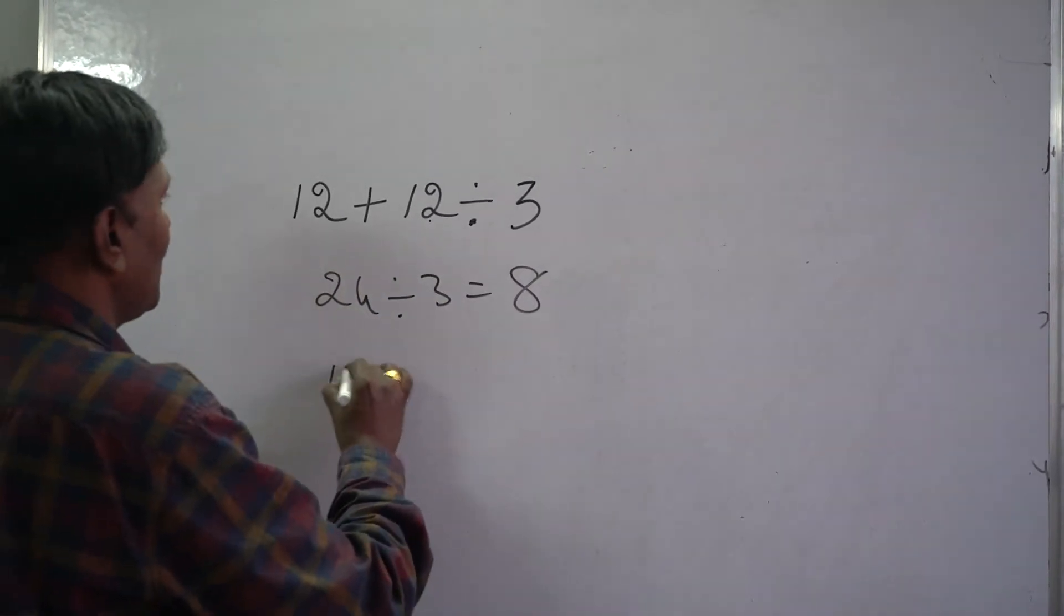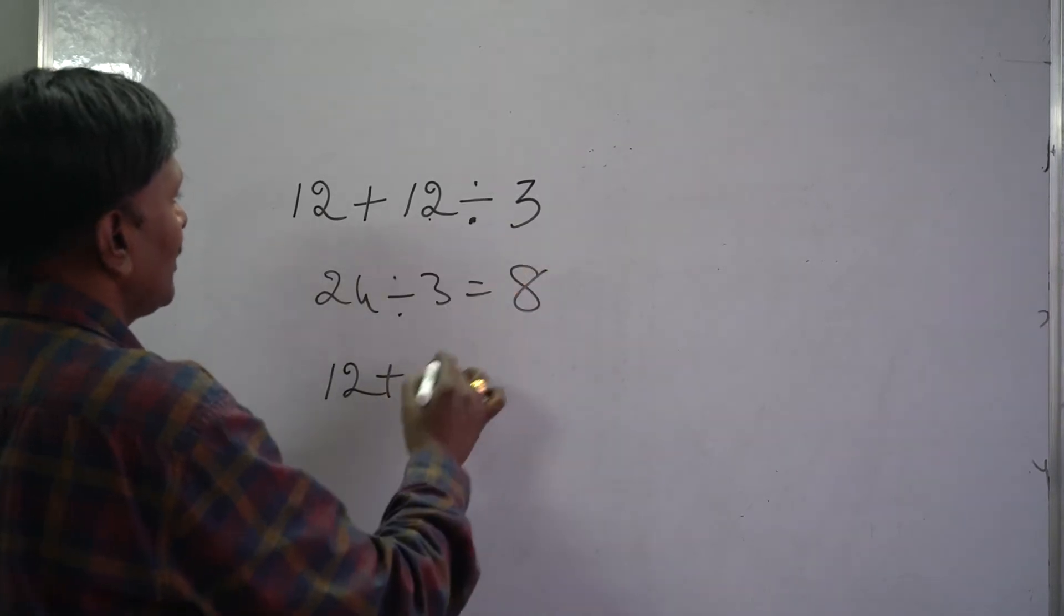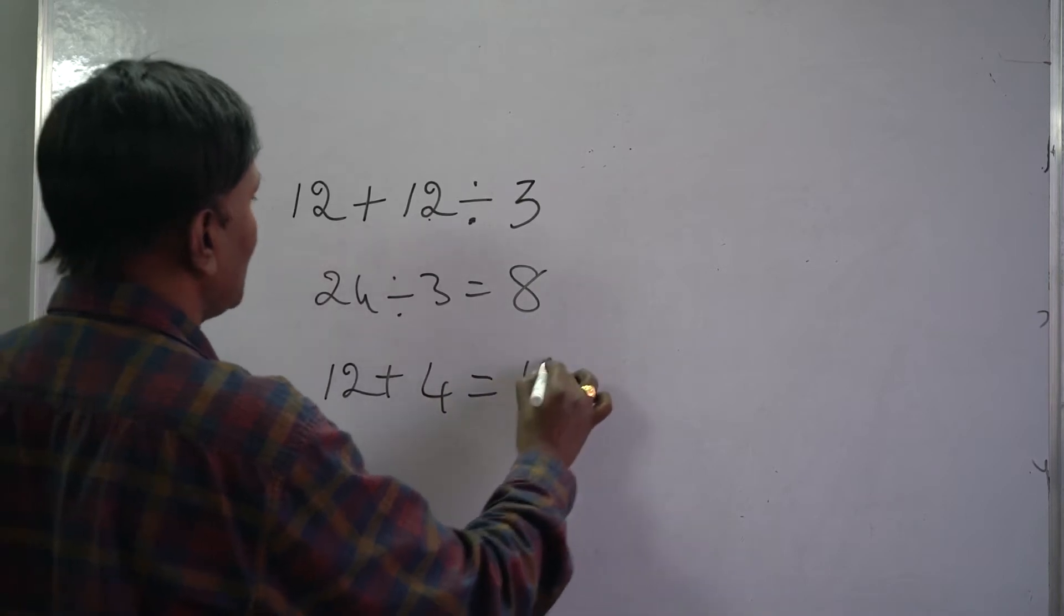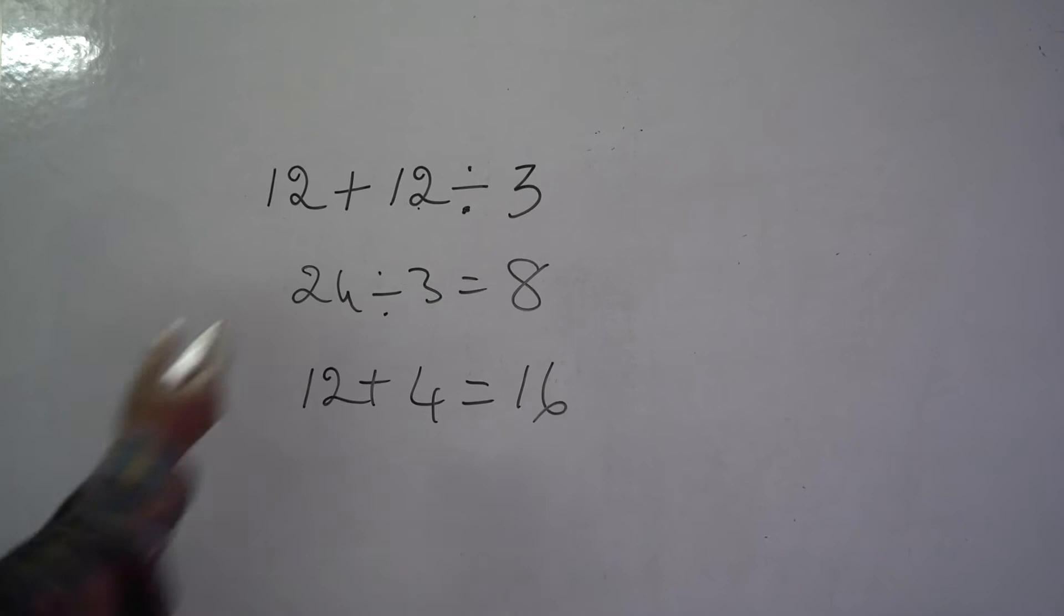And one more is, 12 plus 12 by 3 is how much? 4. So, 12 plus 4 is how much? 16. So, we are getting two answers. Which one is correct?